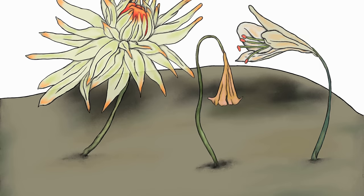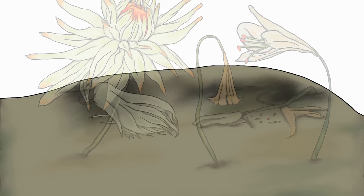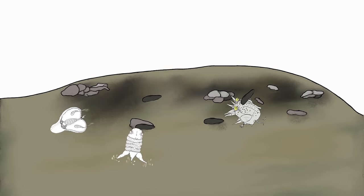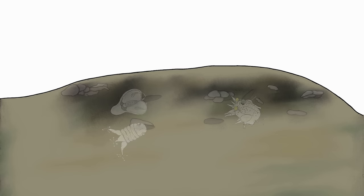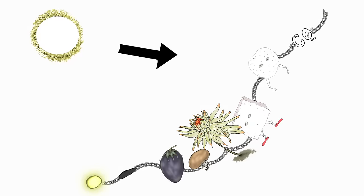If those plants die, they decompose, and tiny microorganisms break down those carbohydrates and again release greenhouse gases as a byproduct. As you see, energy originates from the sun and is then transferred as it moves through the food chain.